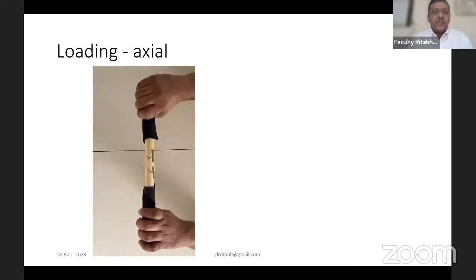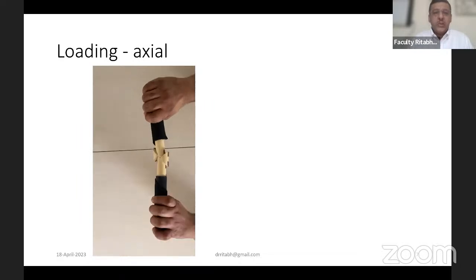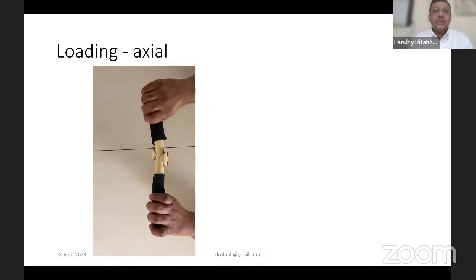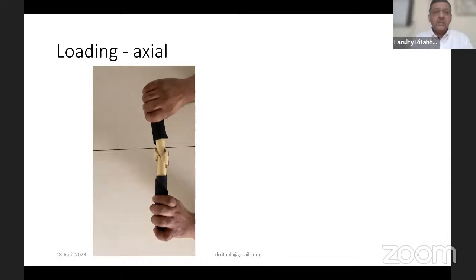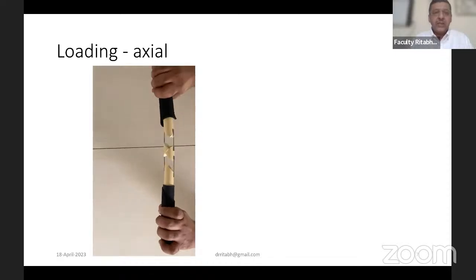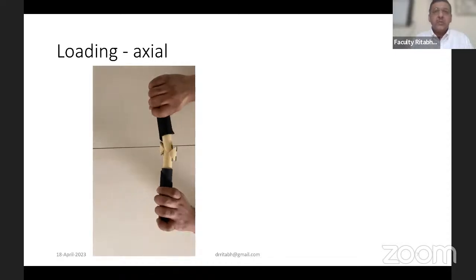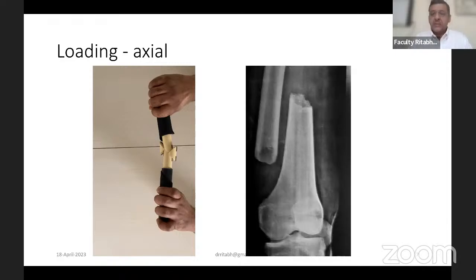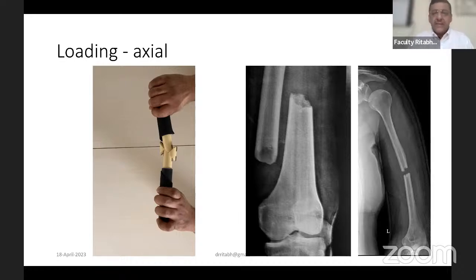Axial forces tend to lengthen or shorten the bone. In a multifragmentary fracture, if not splinted by a material or plate, the limb can be seen shortening or lengthening on functional loading — sometimes bones override and shorten, sometimes they lengthen. Axial forces essentially tend to shorten or lengthen the bone.